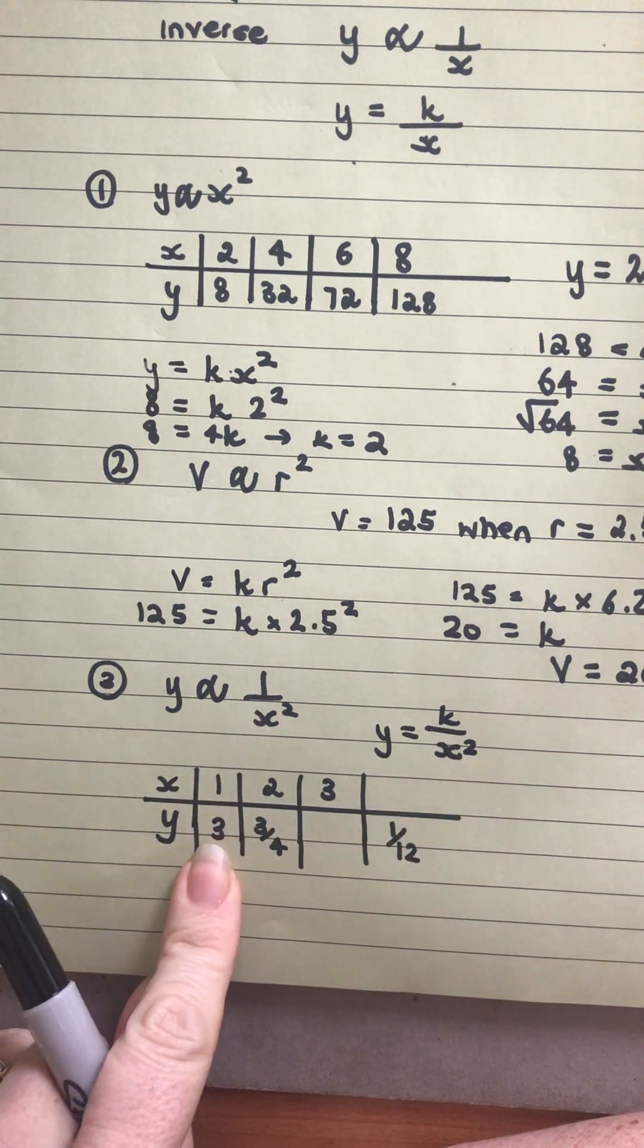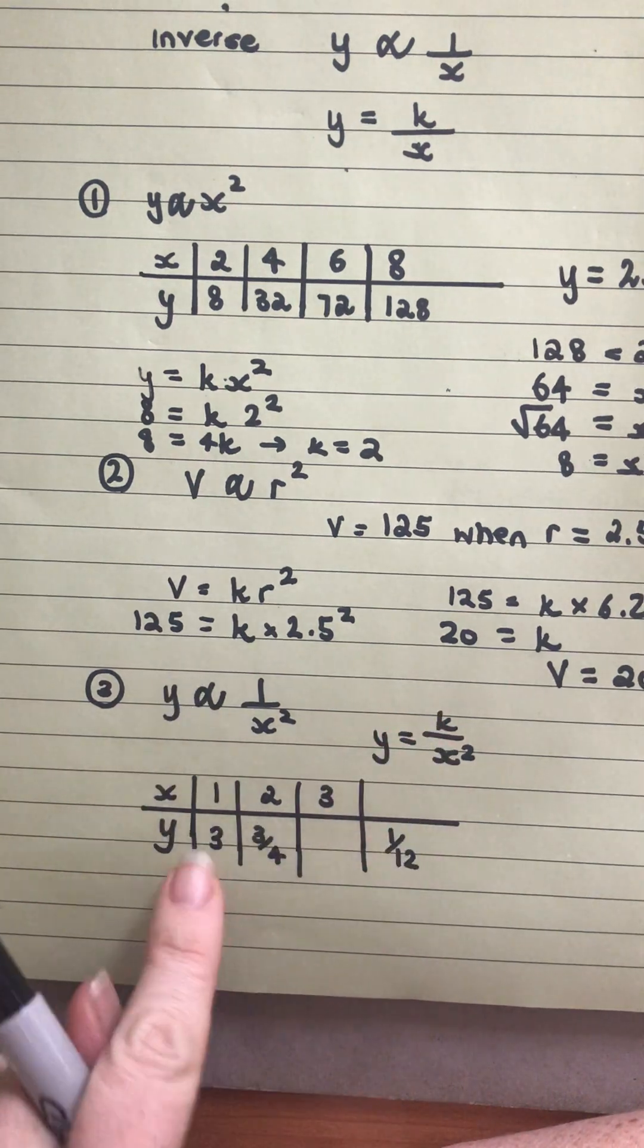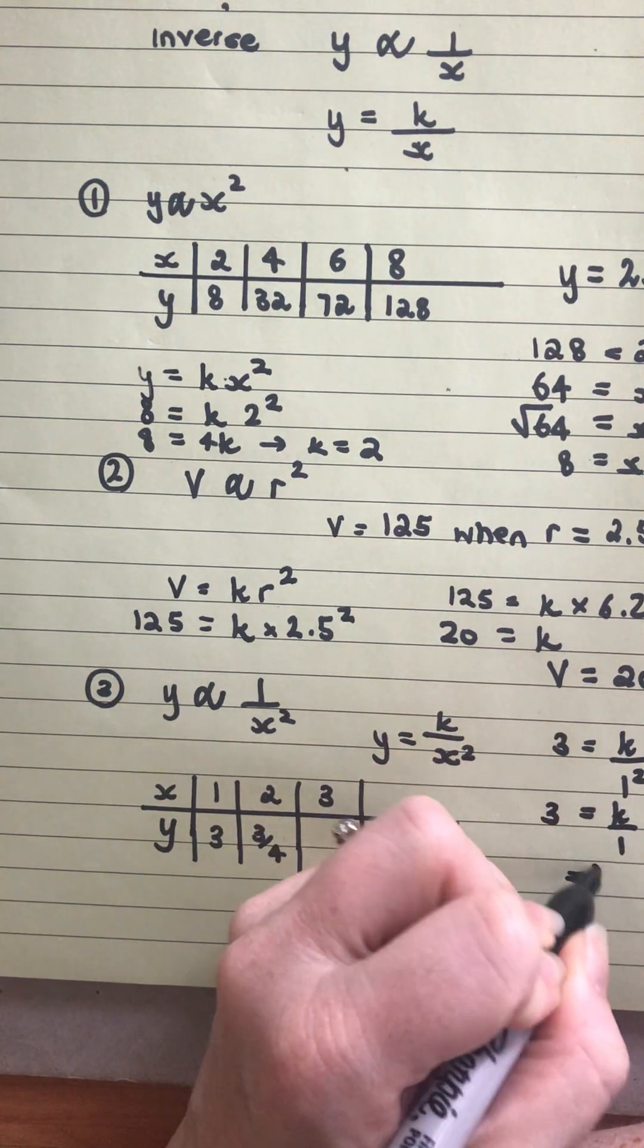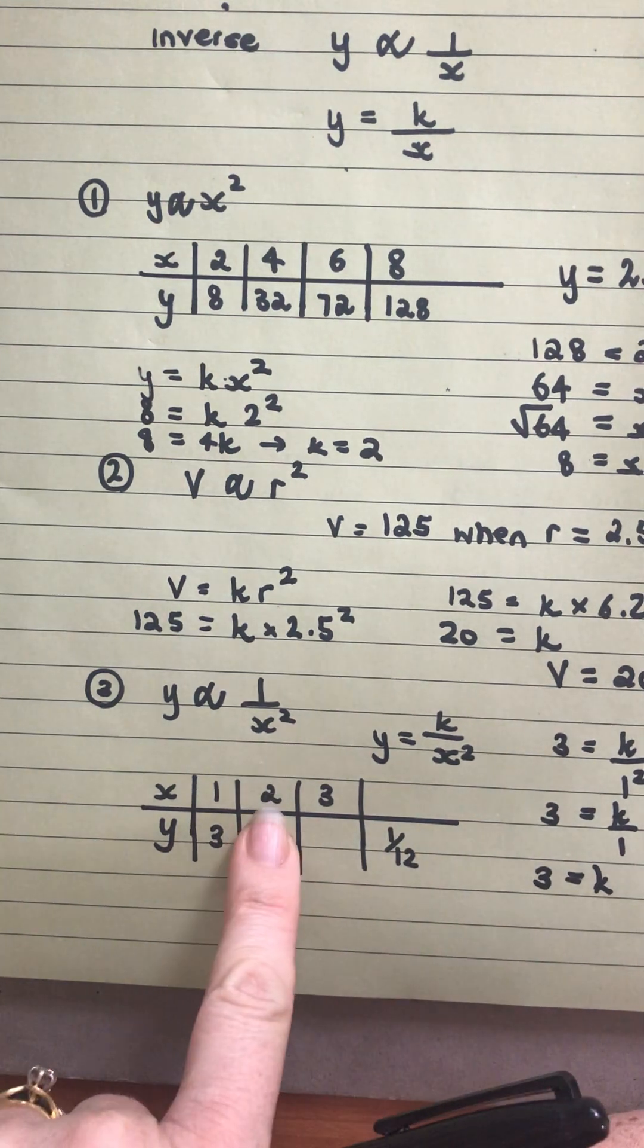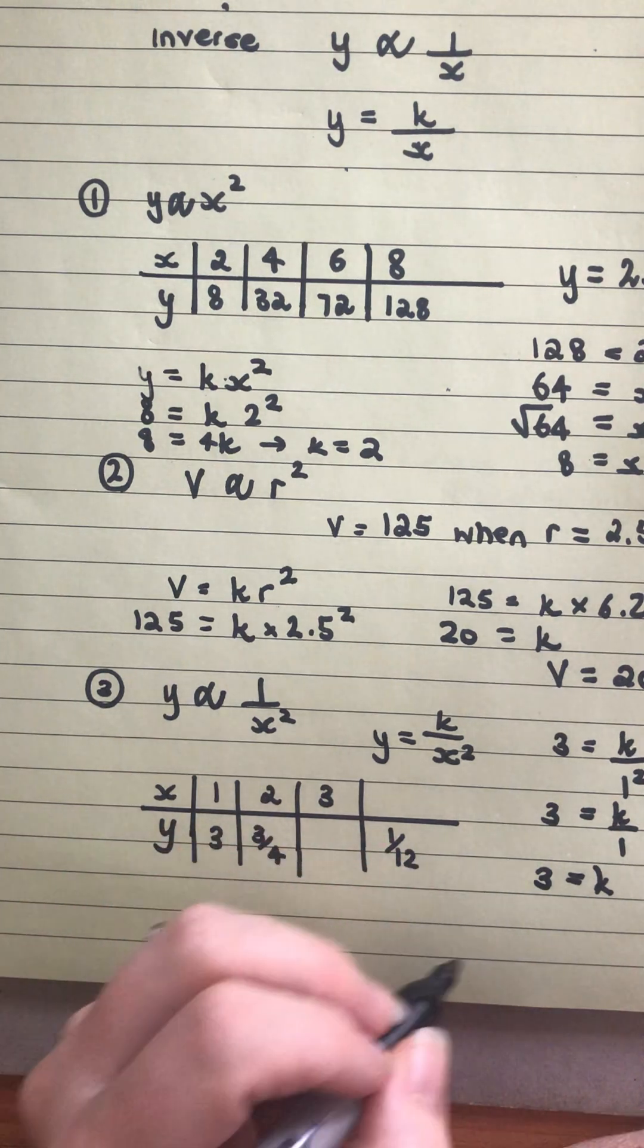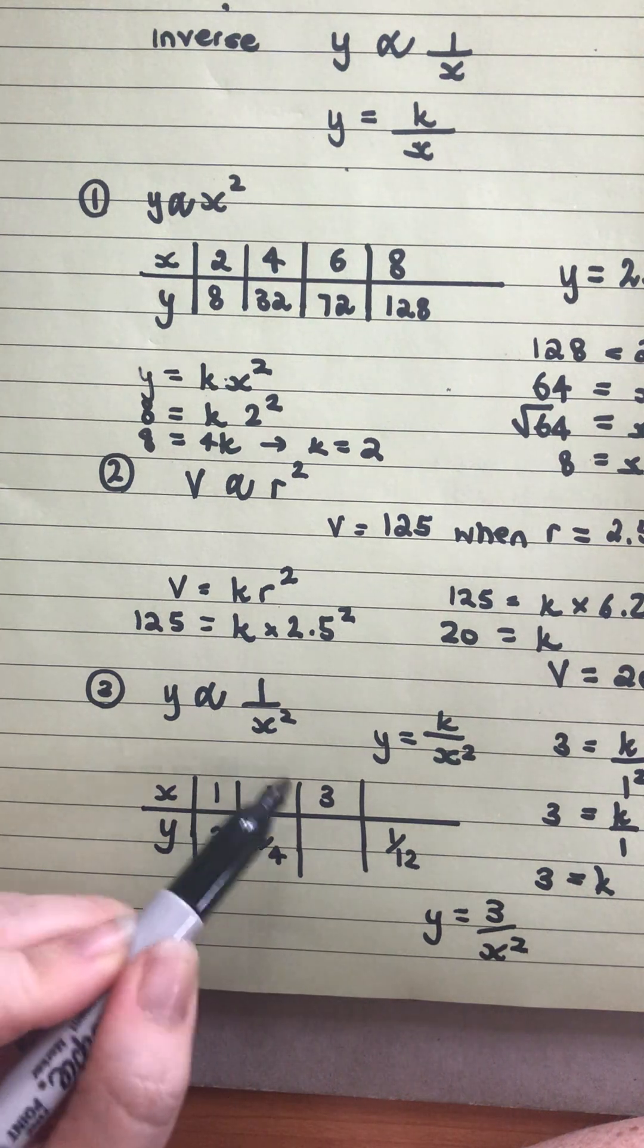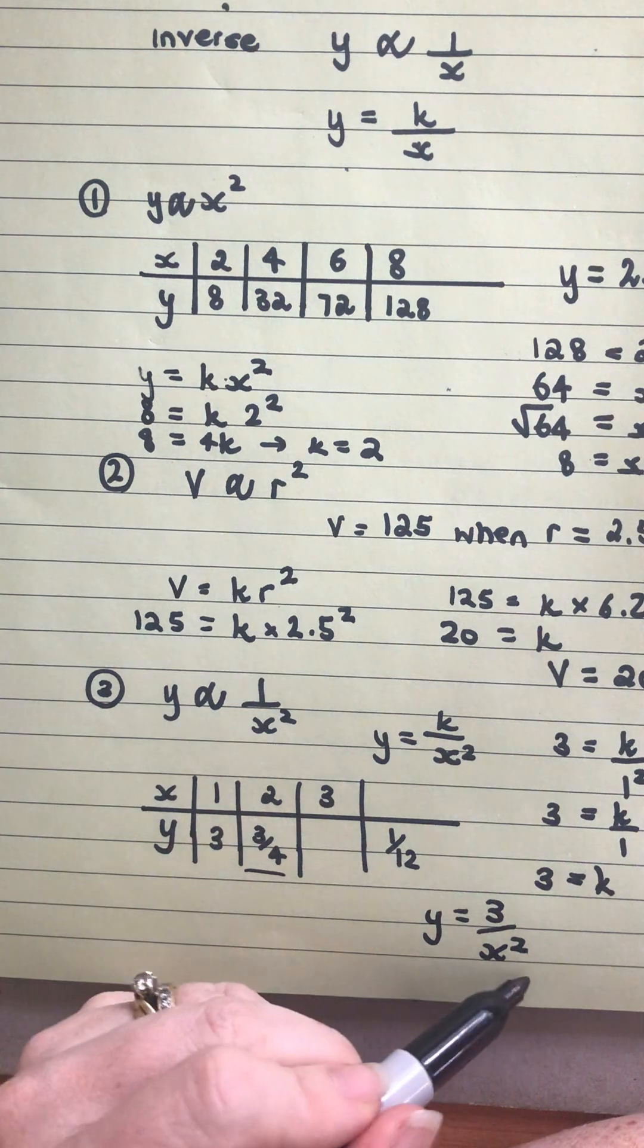I'm going to substitute in these values to try and work out what the k is. If I've got y is equal to k on x squared and I've got 3 is equal to k over 1 squared, k over 1 means my k will be 3. I want to do that check here though. If I've got a 2 here, that would make my equation y equals 3 on x squared. That means I will be doing 3 divided by 2 squared. 2 squared is 4. 3 divided by 4, that is the 3 quarters that we've got there. So we know we've got the right equation.